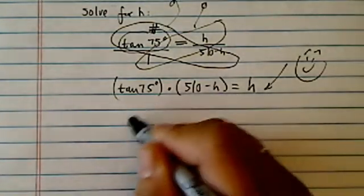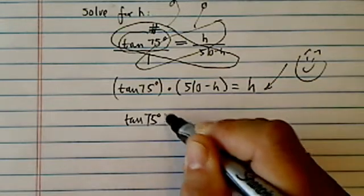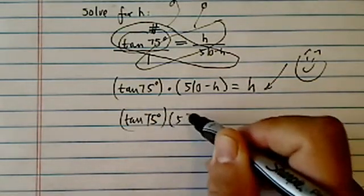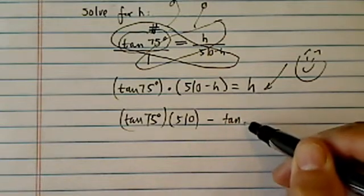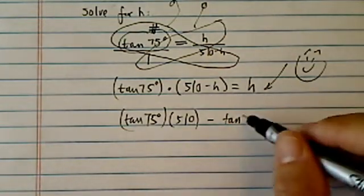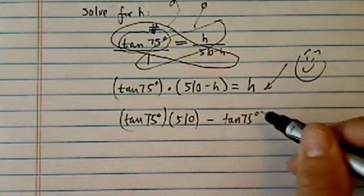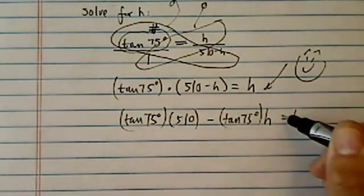All we have to do is really just distribute it in there. Now, I am keeping this tangent 75 because I think it's prettier than writing 3.7, whatever those decimal points are. I'm just going to keep on dragging it along until I know what h has as a form-wise, and then I'll put it together.